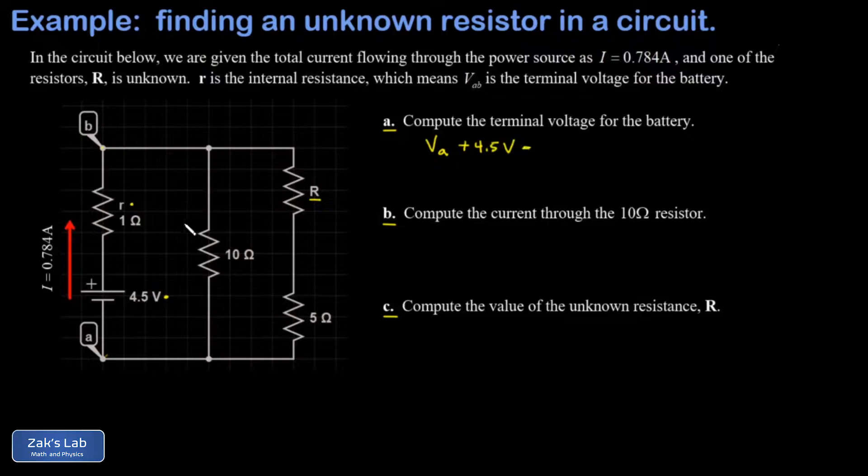minus the voltage drop across the internal resistance. Well, that's given by Ohm's law. It's I times R. That's all equal to the potential at node B. Then what we mean by this notation VAB is actually the difference VB minus VA.